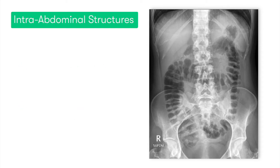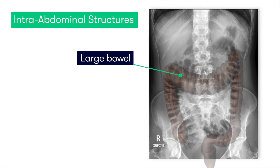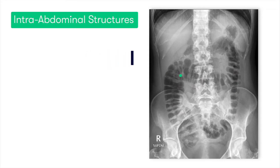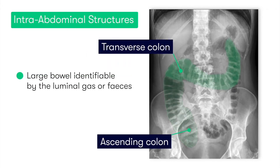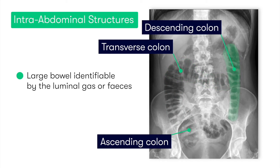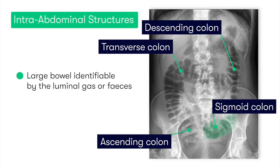Continuing on distally along the GI tract, we get to the large bowel, which you can see here, lying in the peripheral aspect of the abdominal x-ray. More often than not, we should be able to identify the large bowel because of the presence of luminal gas or feces.